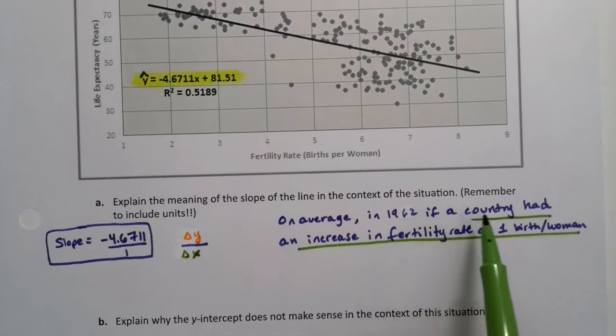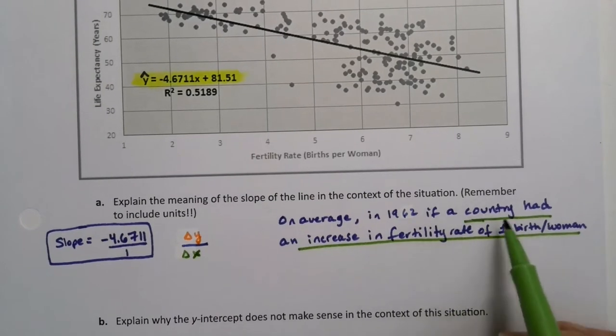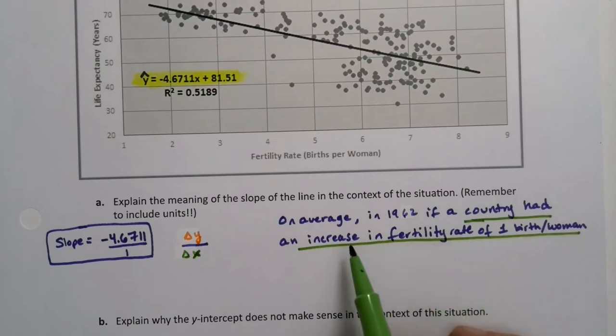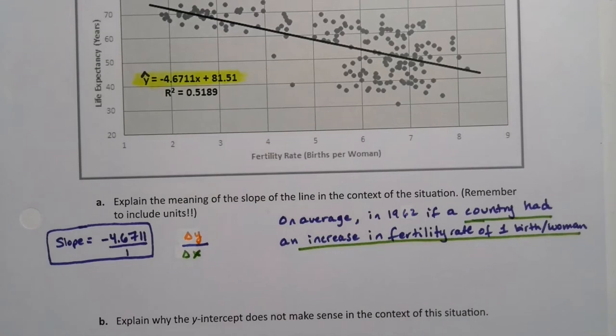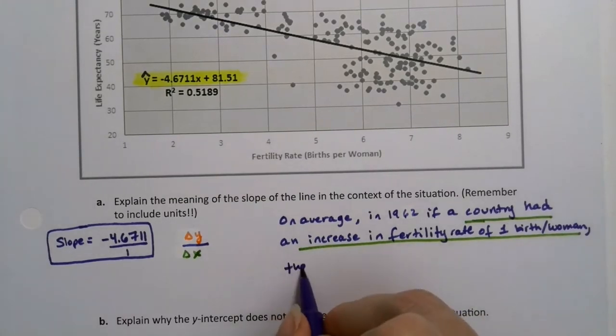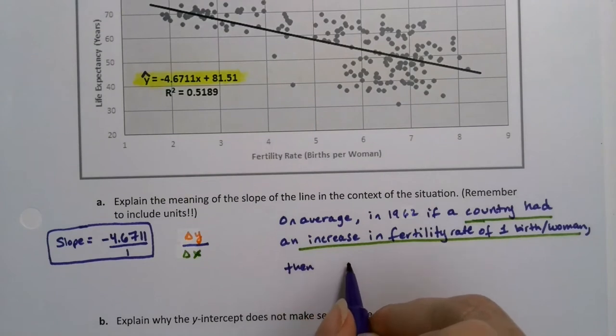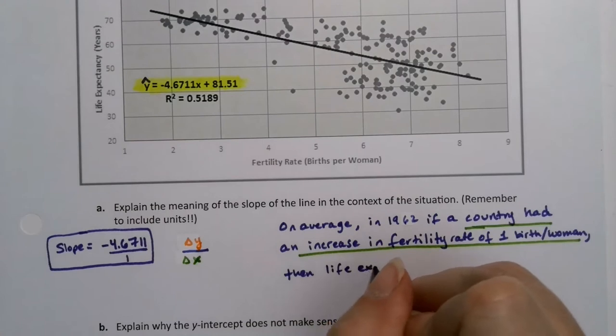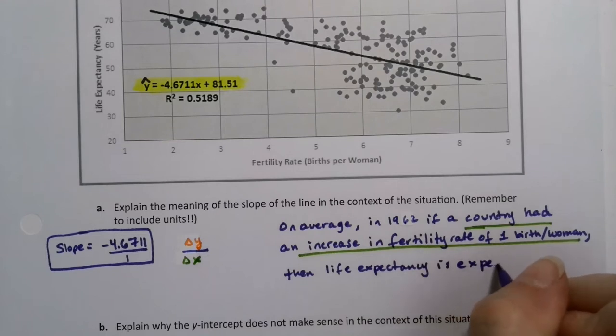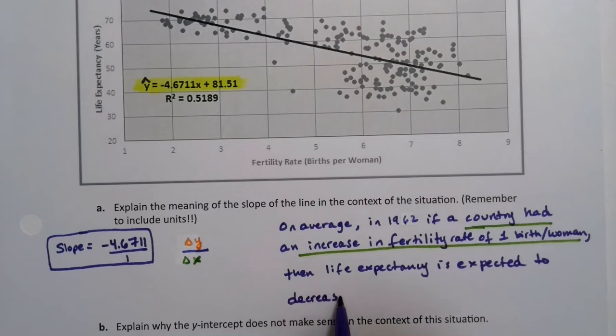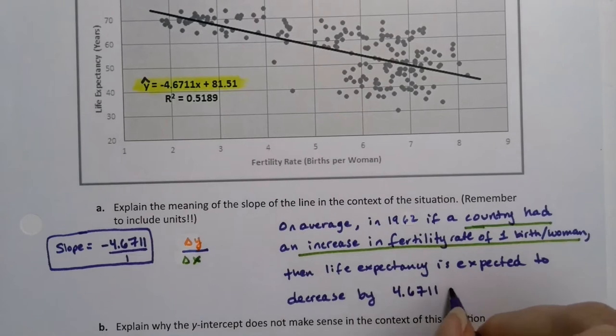There's several ways you can write this. But essentially, I'm saying, hey, x, which is fertility rate for these countries, increases by 1. Then y is expected. Y was the life expectancy. Then life expectancy is expected to decrease by 4.6711 years.